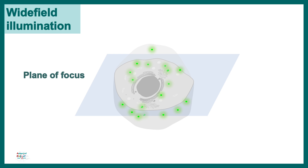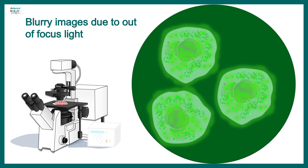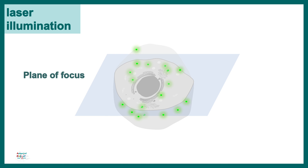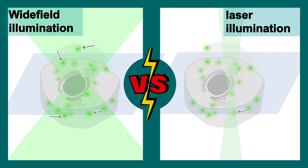To understand why, consider wide-field illumination versus laser illumination. In wide-field illumination, the light excites fluorophores in the plane of focus but also excites many fluorophores outside that plane, causing all the light from different planes to flood the detector at once, resulting in a blurry image. In confocal microscopy, the laser is focused into a narrow, tight waist volume, greatly reducing illumination of fluorophores in other planes, giving better resolution and less out-of-focus light.